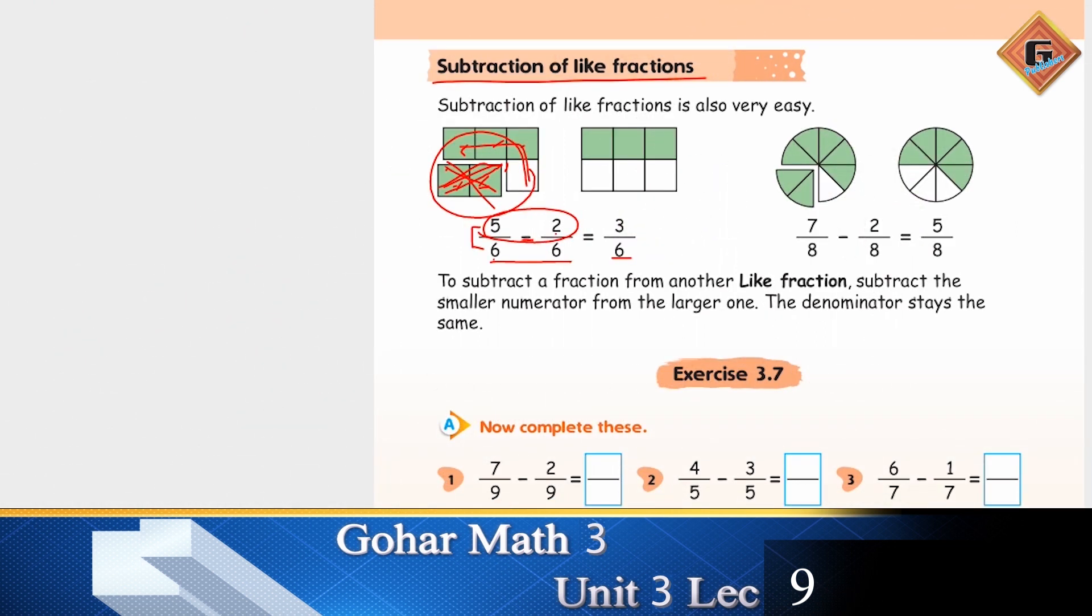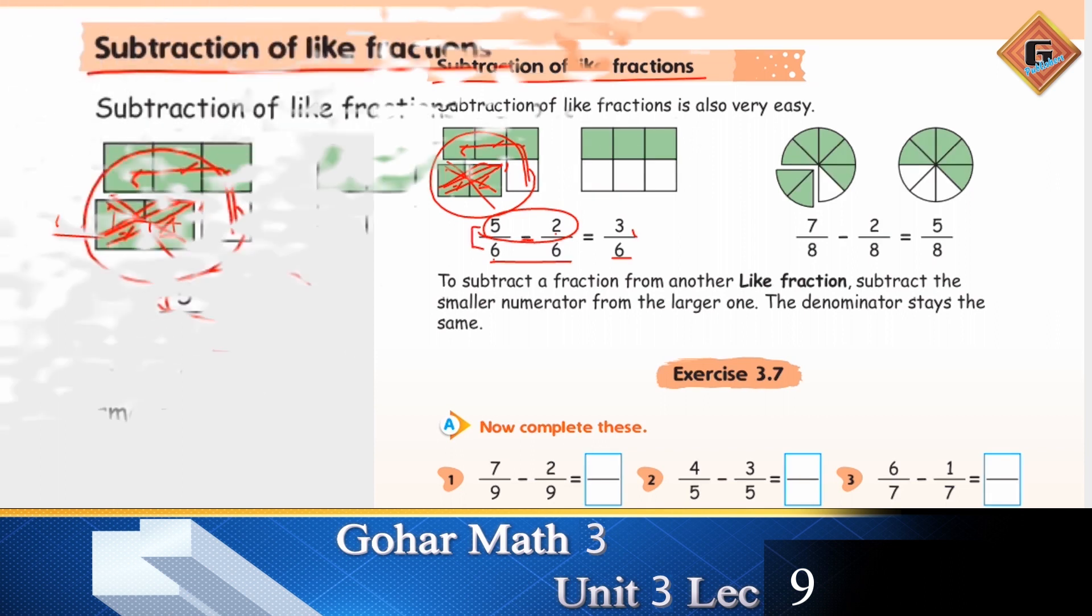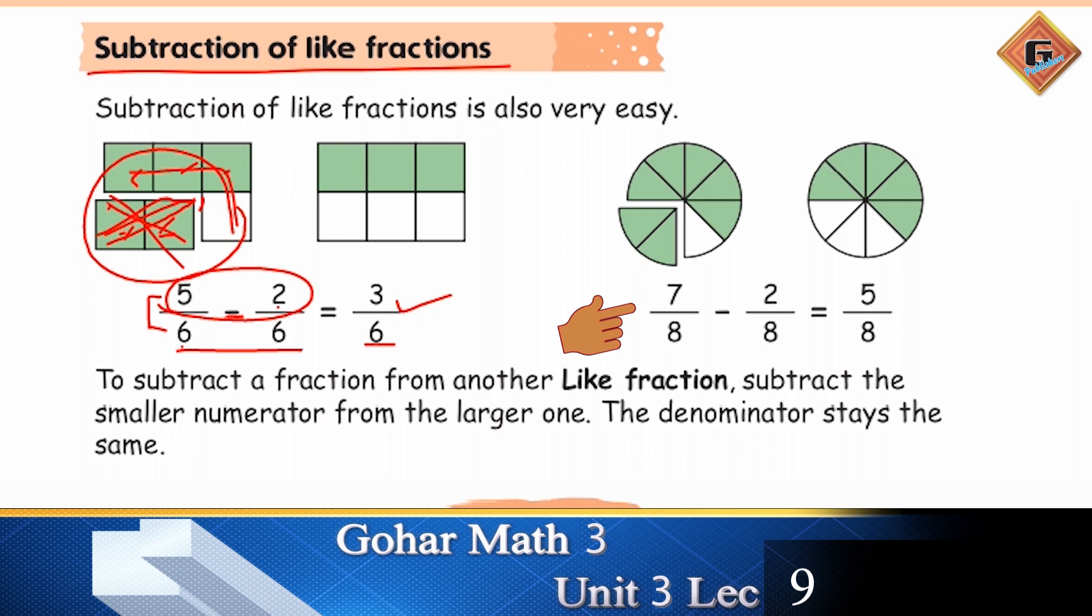To aapka denominator same rahe ga. Like fractions ka yahi rule hai. And you are going to subtract the numerators. To 5 mein se agar aap 2 subtract kar diya hai, to how many are left? 1, 2, and 3. So you are going to write 3 over 6. That is your answer. Same is here: 7 over 8 minus 2 over 8. Aapke 8 parts, ek figure ke, ek picture ke, us mein se aapne 7 color kiya hua hai. Then you have taken 2 away. To aapne side pe kar diya, minus kar diya, and the answer is 5 over 8.